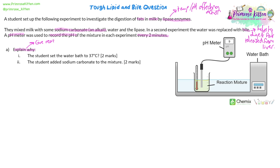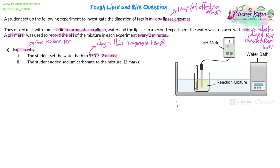The first question asks us to explain why — that means give reasons for. Explain why the student set the water bath to 37 degrees, for two marks. We need to think about what two points we're going to say. In enzyme questions, we always have to be thinking about optimum conditions — what pH and temperature the enzymes we're looking at are going to work best at.